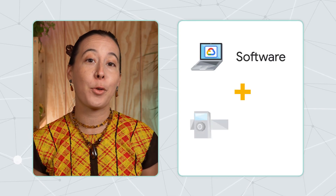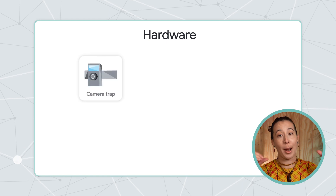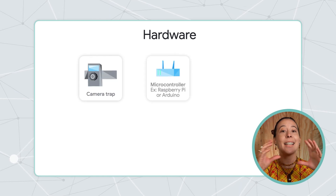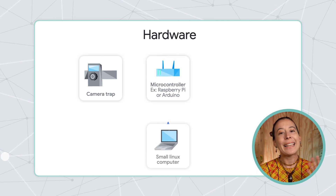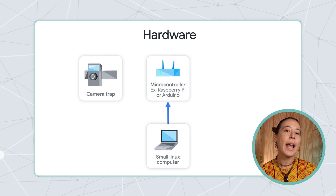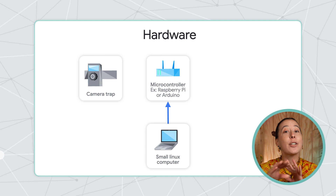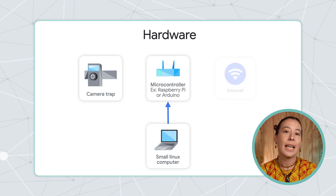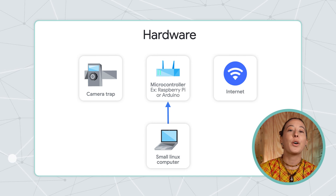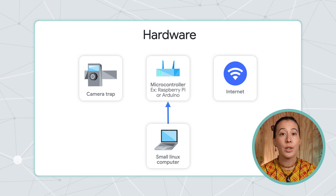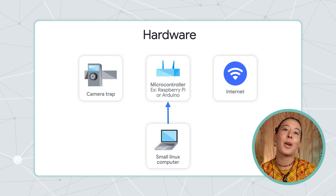Let's start with the main ingredients for the hardware and the software. From a hardware standpoint, we need a camera trap taking photos connected to a microcontroller like a Raspberry Pi or Arduino. This serves as a small Linux computer and will have an ML model installed that labels images of species and omits blank images. If it can connect to the internet via a cellular network, it can send labeled photos automatically; but in remote areas, you can carry the microcontroller to a Wi-Fi enabled area periodically to do this transfer.